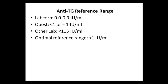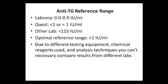What's the optimal reference range? Here I have it listed as less than 1 IU per milliliter, but it really does vary with the lab. Due to different testing equipment, chemical reagents used, and analysis techniques, you can't necessarily compare results from different labs. So while it's easy to say that regardless of the lab someone goes to they should be less than 1 IU per milliliter, a value of 30 at a lab using a range of less than 115 IU per milliliter might actually be acceptable.